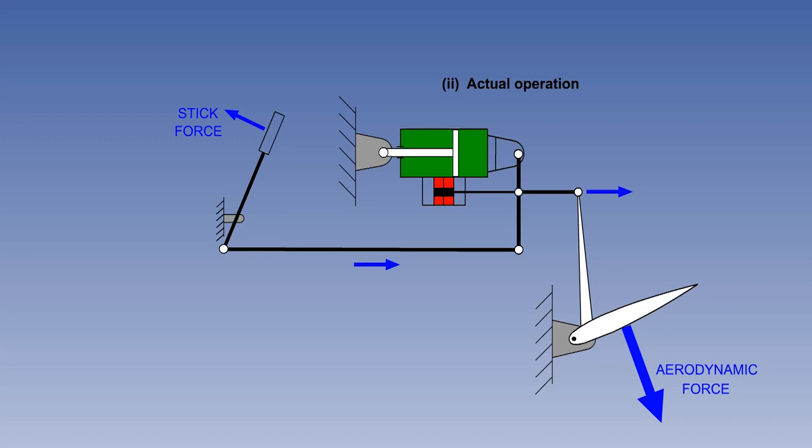The stick force will change in proportion with the square of the IAS as it would in a purely manual control system. If hydraulic pressure is lost from a power-assisted flying control, the pilot would still be able to control the aircraft, but with significantly higher stick forces.